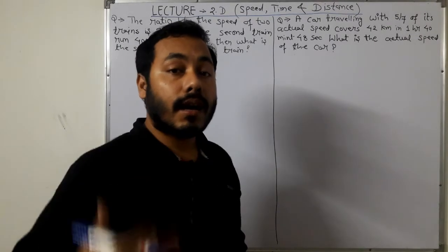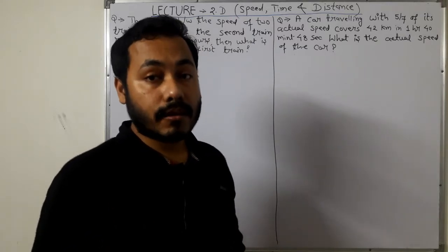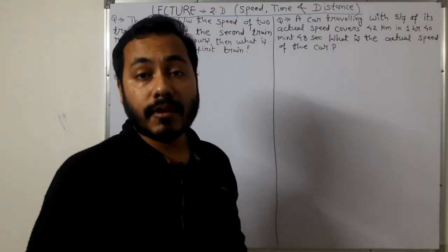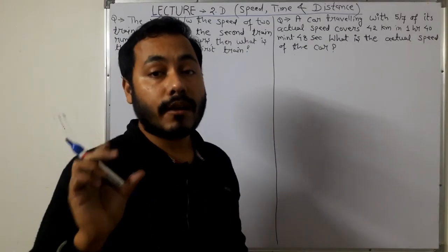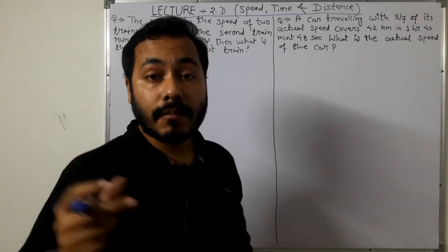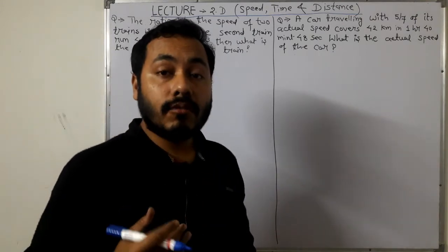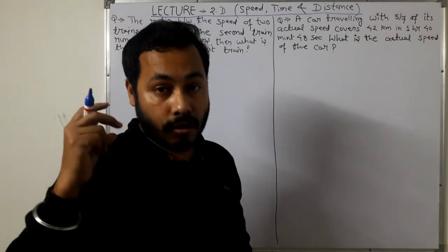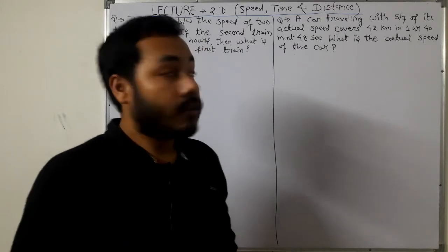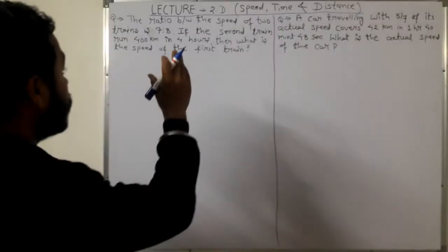These problems frequently appear in different types of competitive examinations. At the end of the video, I am going to give you one numerical problem related to Time and Distance that you need to solve and post the answer in the comments. So let's start. The first question is: the ratio between the speeds of two trains is 7 is to 8.